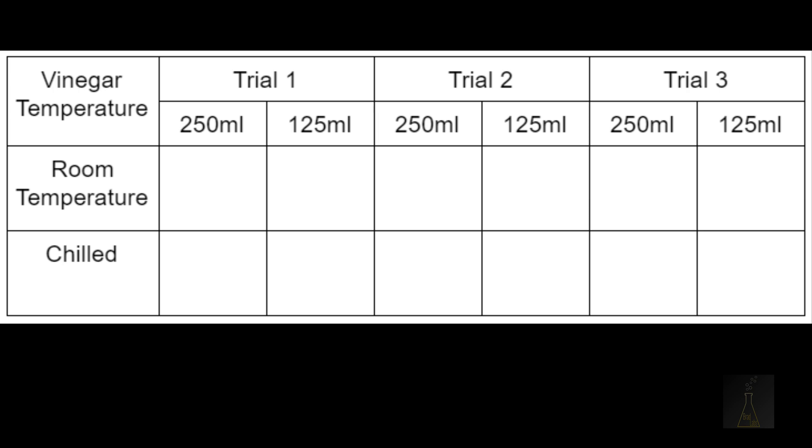It took 2 seconds for our room temperature baking soda and vinegar to bubble up and reach the 250 milliliter level, but it took the chilled baking soda and vinegar 4 seconds to reach the same spot. 22 seconds into our experiment, our room temperature fell to the 125 milliliter level, but it took until 35 seconds into our experiment for the chilled baking soda and vinegar to do the same.